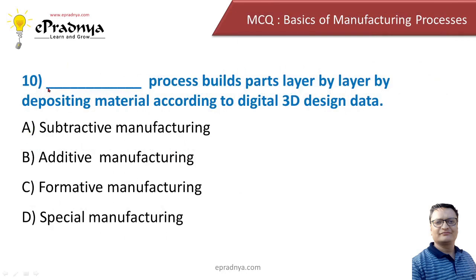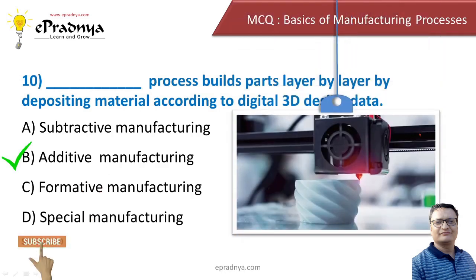The last question: ___ process builds parts layer by layer by depositing material according to digital 3D design data. Options: subtractive manufacturing, additive manufacturing, formative manufacturing, and spatial manufacturing. The correct answer is additive manufacturing. Additive manufacturing, also known as 3D printing, creates 3D products by applying layer upon layer of material — it is one of the most recent techniques in manufacturing.